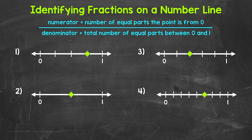The first thing we need to do is see how many equal parts — equal lengths — the distance between zero and one has been divided into. This is going to be our denominator. We have one equal part, two equal parts, three equal parts, four equal parts. This tells us we have fourths.